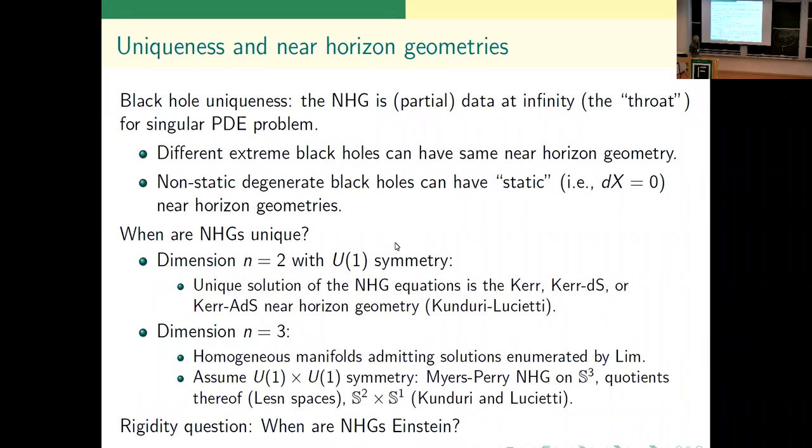Let me mention some cases where things are known for uniqueness of near horizon geometries, namely with a U1 symmetry, the circle action. You've got uniqueness of the Kerr or Kerr with cosmological constant near horizon geometry due to Kunduri and Lucietti. Dimension three: if you look at homogeneous manifolds, the solutions are enumerated by Alice Lim, who was a graduate student of Will Wylie in her thesis. Lens spaces here should be lens spaces. U1 cross U1 symmetry: then you have a little list of what's possible for near horizon geometries.